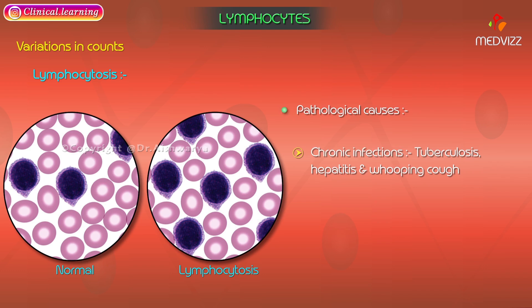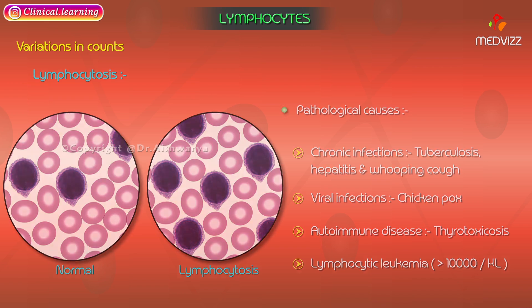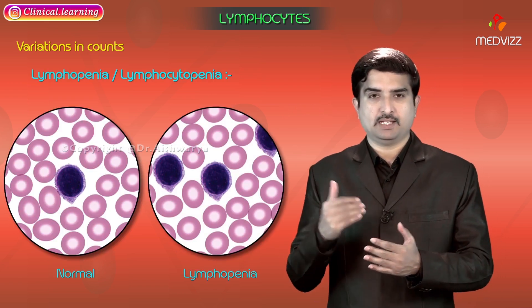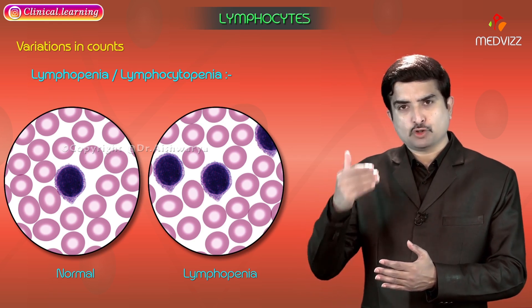Pathological causes of lymphocytosis include chronic infections like tuberculosis, hepatitis, and whooping cough; viral infections like chickenpox; autoimmune diseases like thyrotoxicosis; and especially lymphocytic leukemia, which is the most common cause of lymphocytosis, where the absolute lymphocyte count is greater than 10,000 per microliter.